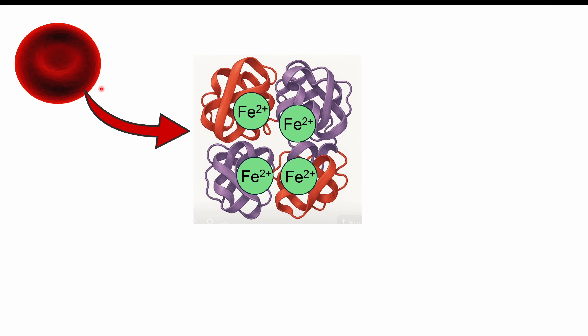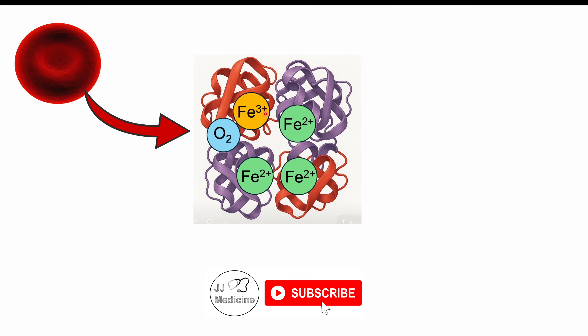Now let's discuss the pathophysiology. Red blood cells are essentially bags of hemoglobin. Hemoglobin is composed of four globin chains — four polypeptides formed into one hemoglobin molecule — and there are four iron atoms in a hemoglobin molecule. Iron is important because it helps hold onto oxygen for oxygen delivery. Normally, oxygen is held by one of those iron atoms, but due to some oxidative process, one of those iron atoms can be oxidized into the ferric ion, or the oxidized form of iron.